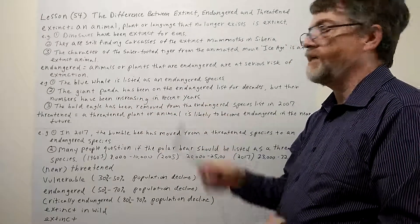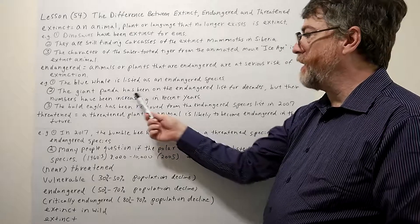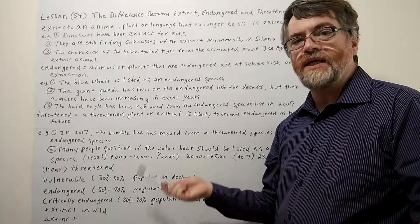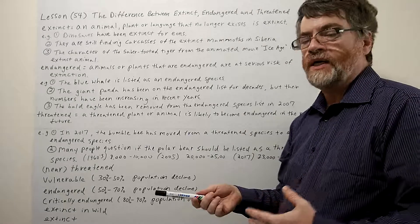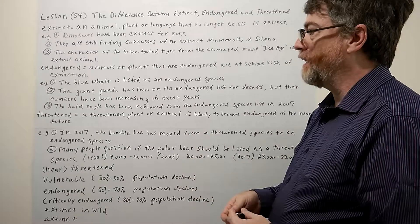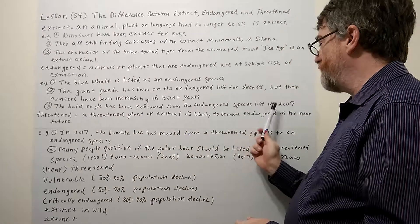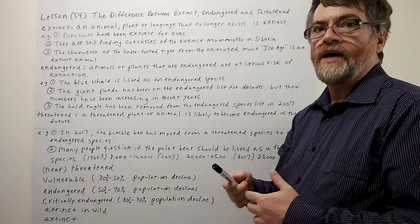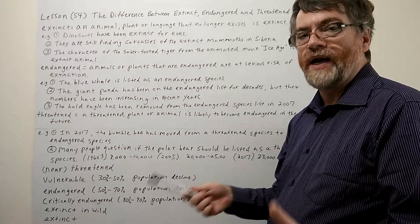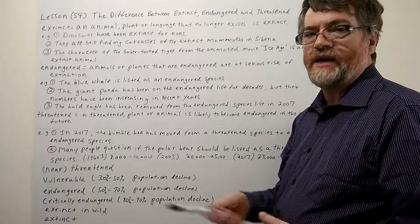So let's look at the first one here. The blue whale is listed as an endangered species. The giant panda has been on the endangered list for decades, but their numbers have been increasing in recent years and the Chinese government has gotten very strict about controlling it. So they may actually get off the list pretty soon. The bald eagle has been removed from the endangered species list in 2007. And this is one I always remember when I was growing up mentioning, but apparently it's not on the list anymore. The numbers have gone up enough.